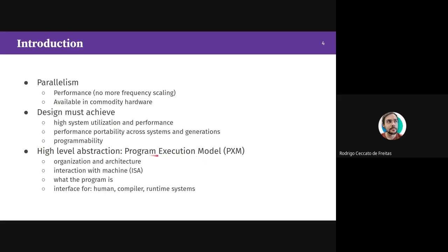We can achieve these three items with a well-defined high-level abstraction: a program execution model. This is not just a programming model — it's an entire program execution model that defines computer organization and architecture, how we can interact with the machine, like the ISA defining the operations we can use, what the program for the system looks like, and all the interfaces for a human to use the system — compilers, runtimes, and so on.